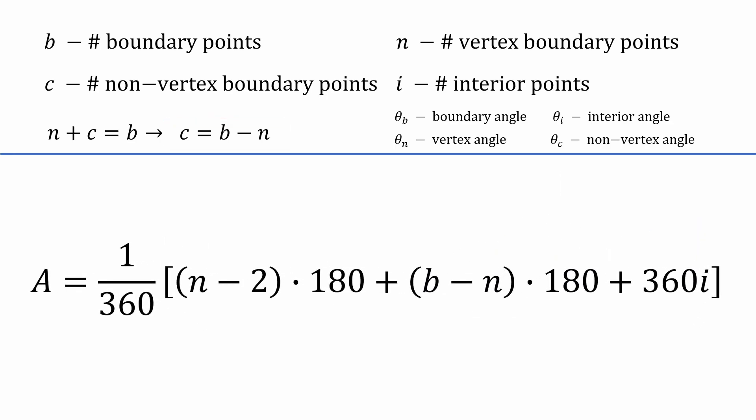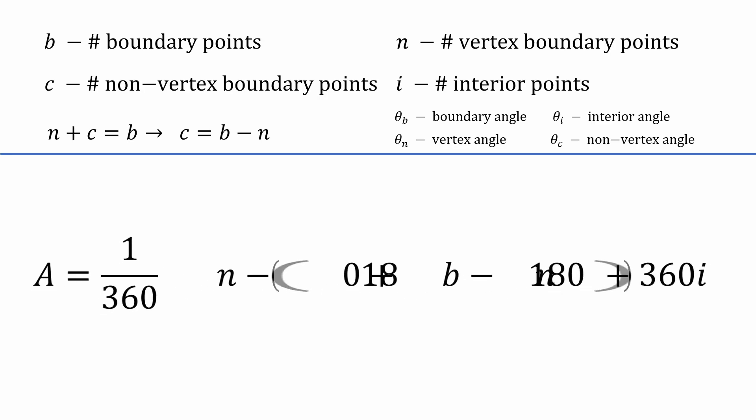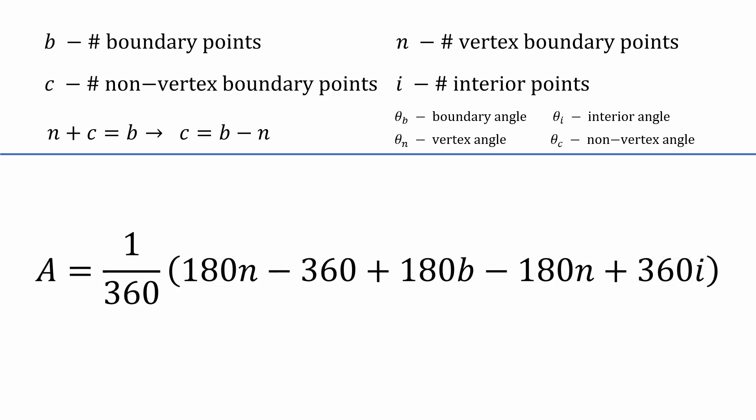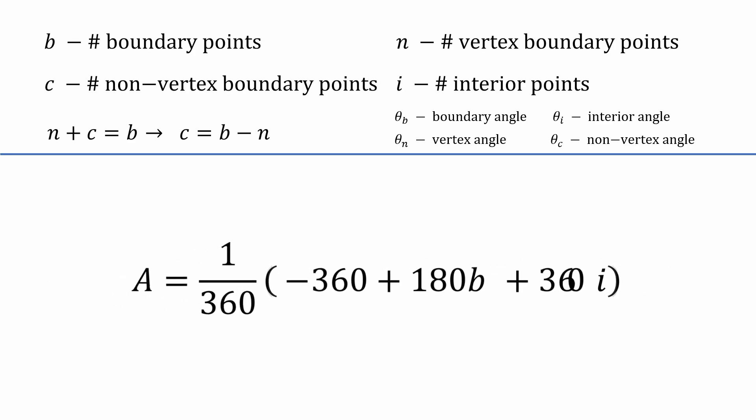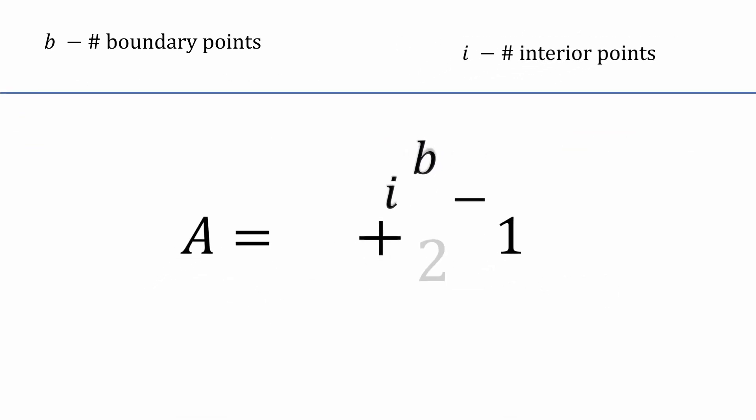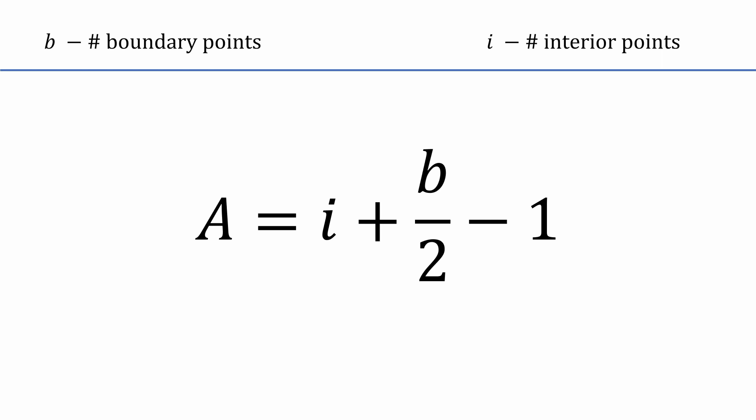Let's distribute the 180s inside the brackets. The 180 n terms cancel to get us this. And finally, let's distribute the 1 over 360 to each term. We got our answer! There it is in all its simplified glory, defined exactly how we wanted, the area in terms of the number of boundary points b and interior points i.